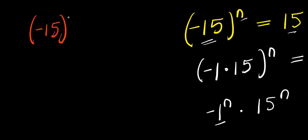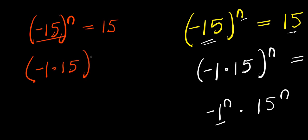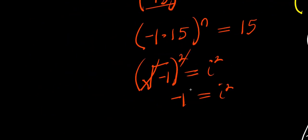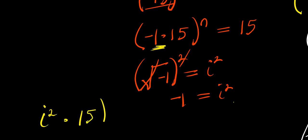Negative 15 to the power of n equals 15. This I can have as negative 1 times 15, to the power of n equals 15. Now, if you have the square root of negative 1, this equals i. Taking the square of both sides, negative 1 equals i squared. If that is the case, I need to replace negative 1 with i squared. So I have i squared times 15 to the power of n equals 15.